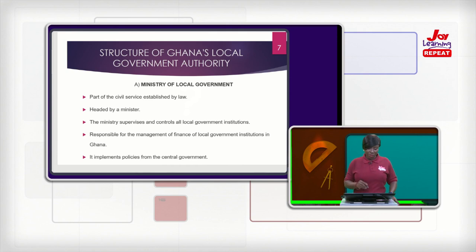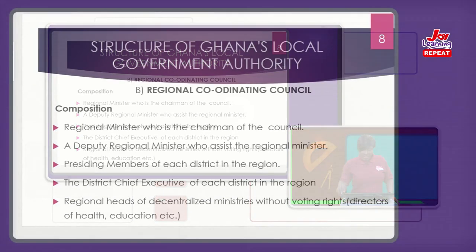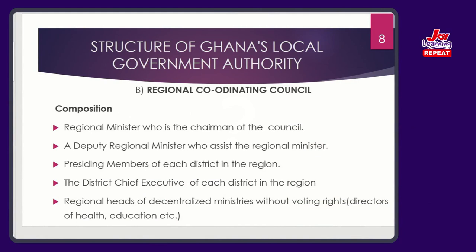Now that we've talked about the first structure, we'll go to the second structure. We've gone through the national level; we've now come to the regional level. We now have the Regional Coordinating Council, or RCC. I hope that as you listen to the news, you may have heard the mention of this particular council — the Regional Coordinating Council, RCC.